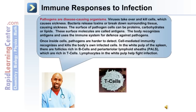Pathogens or microorganisms are disease-causing organisms. Viruses take over and kill cells, causing sickness. Bacteria in the body can release toxins or break down surrounding tissue, causing sickness. The surface molecules of pathogen cells — proteins, carbohydrates, or lipids — are called antigens. The body recognizes antigens and uses the immune system for defense against pathogens. Once inside cells, pathogens are harder to detect, and cell-mediated immunity recognizes and kills the body's own infected cells. For example, in the white pulp of the spleen, there are follicles rich in B cells and peri-arteriolar lymphoid sheaths (PALs) that are rich in T cells, and lymphocytes in the white pulp help fight infection in the body.